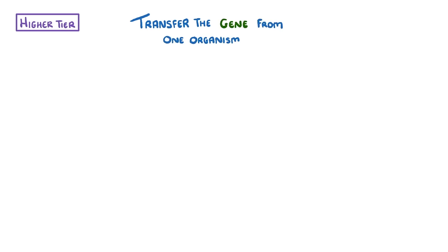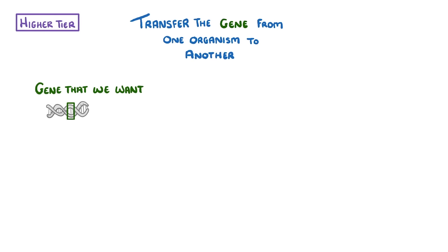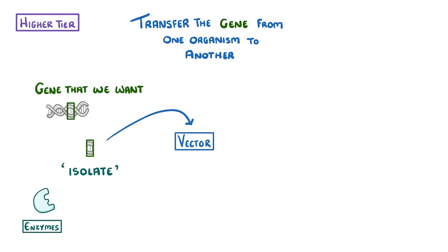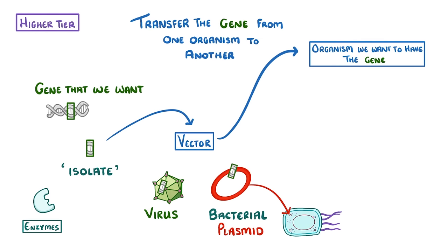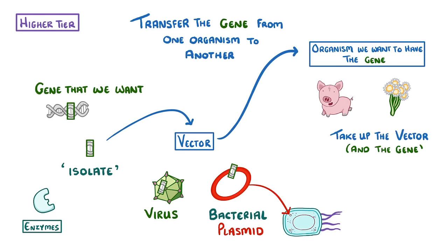The last thing we need to cover is how we actually transfer the gene from one organism to another. The first step is to find the gene that we want, and then cut that section of DNA out to isolate it, which we do using enzymes. Next, we insert the gene into a vector, which could either be a virus or a bacterial plasmid — those little loops of DNA that bacteria have. We then introduce the vector to whichever organism we want to have the gene, for example a pig or a plant, and the organism's cells will take up the vector and the useful gene it contains, and so they'll start producing the protein that the gene codes for.